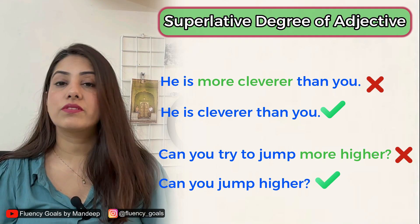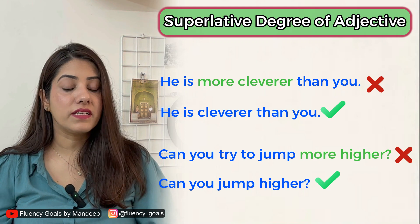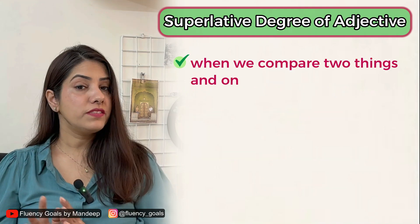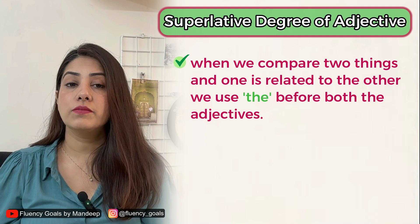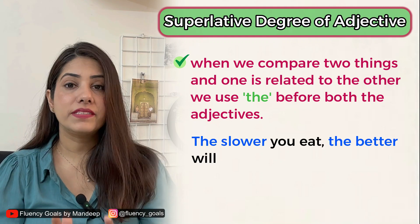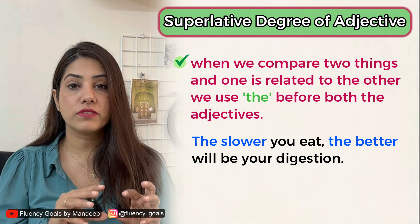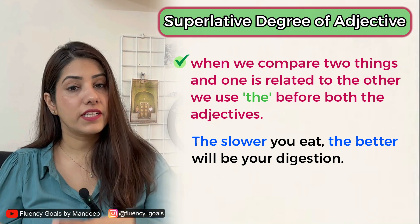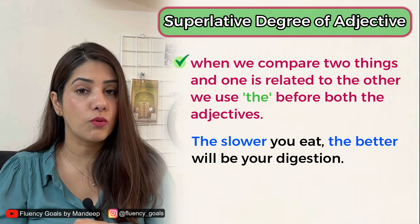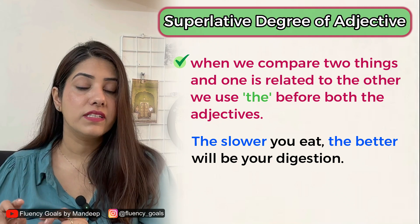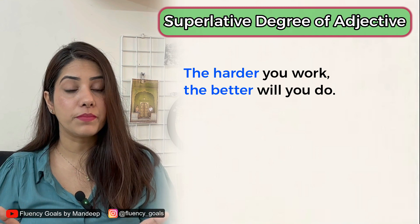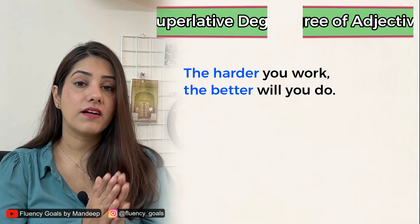When comparison is implied, 'than' may not always appear — for example, 'Can you jump higher?' When two related things are compared, 'the' is used before both adjectives. Examples: 'The slower you eat, the better will be your digestion' — eating and digestion are directly related. 'The harder you work, the better will you do' — both things being compared are directly related to each other.